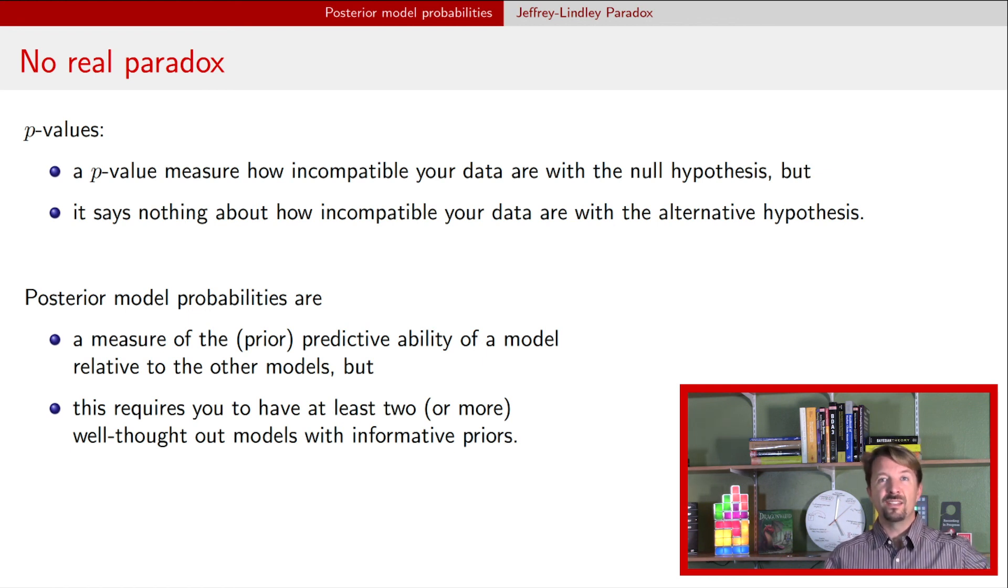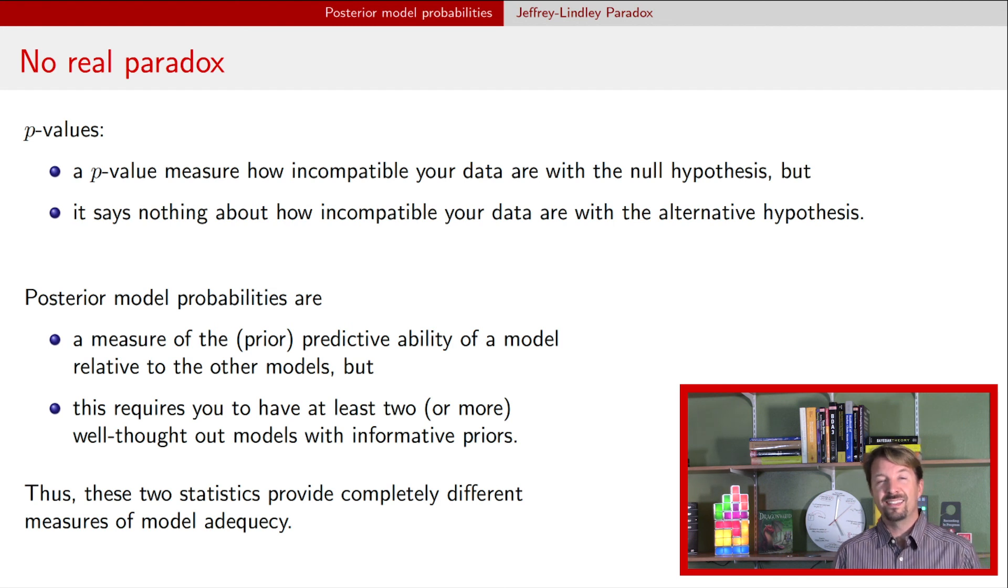And so the reason that there's no paradox here, with one analysis having p-values that are significant but posterior model probabilities of null hypotheses being high, is that these just quantify two completely different measures of model adequacy. The first one just talks about the null, the other one says this null compared to some other model or some other set of models.